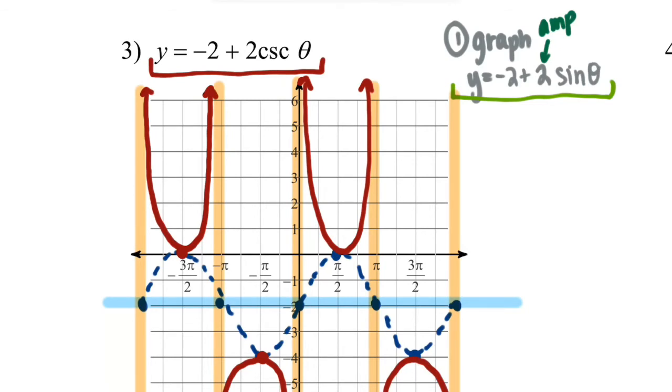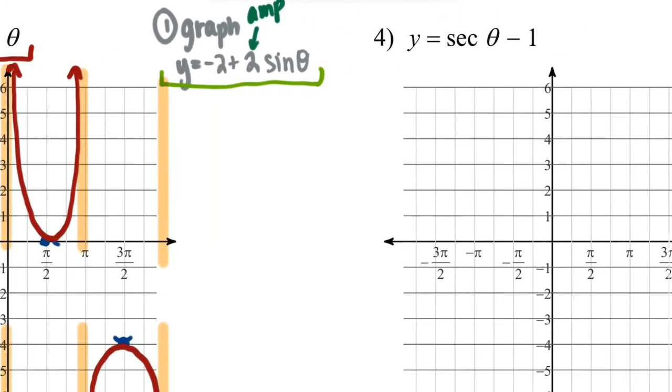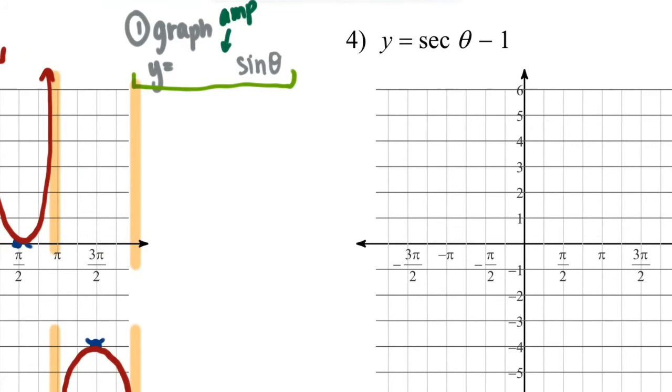Now if we wanted to be extra particular, we could go in and we can erase that sine curve because it's really not necessary. And there's our beautiful cosecant curve. Or you could just leave your dashed lines, just make them very light. I'm cool with that.